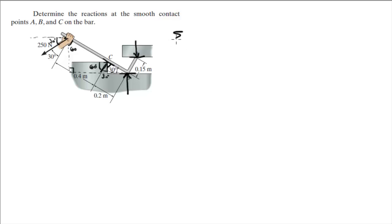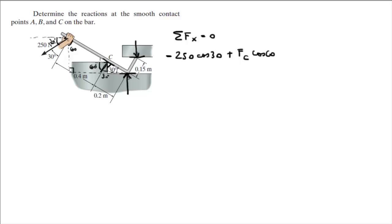Sum of the forces in X is equal to 0. In the X, we have the 250 Newton force times cosine of 30 — this is going to the left, so minus — plus the reaction at C, FC, times cosine of 60, because FC is going to the right and has an X component given by FC times cosine of 60. That equals 0. Solving for FC, you get FC = 433 Newtons — the reaction at C.